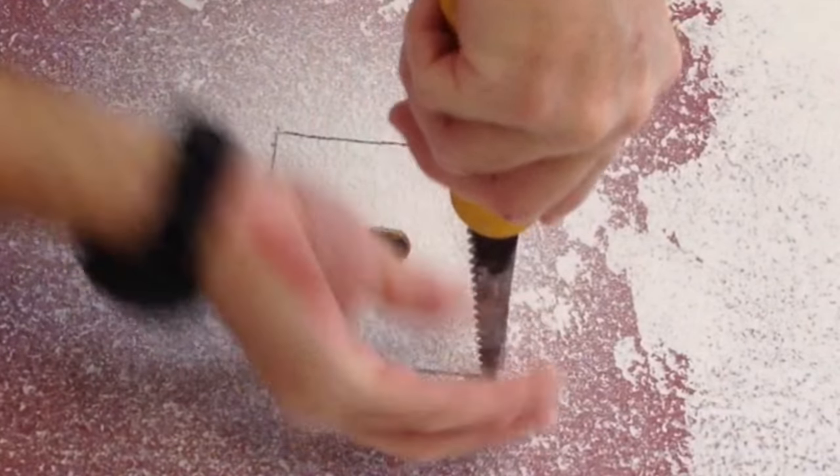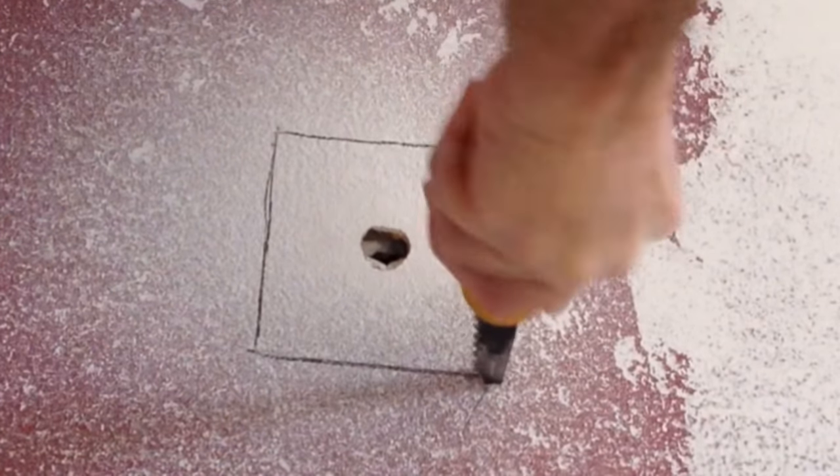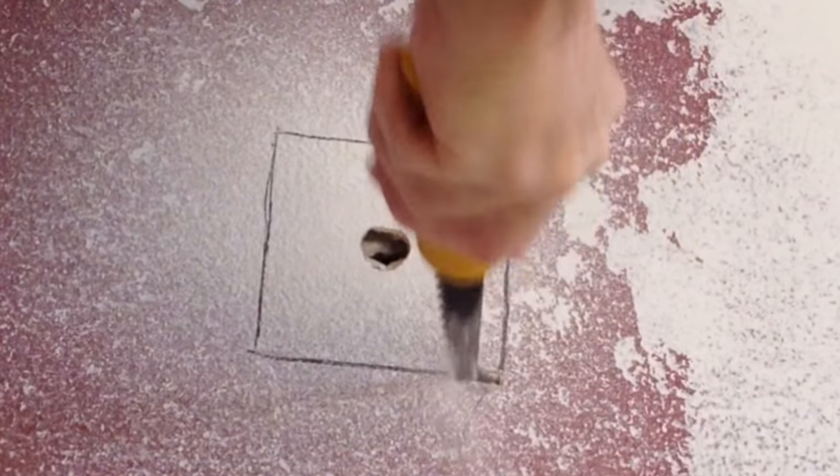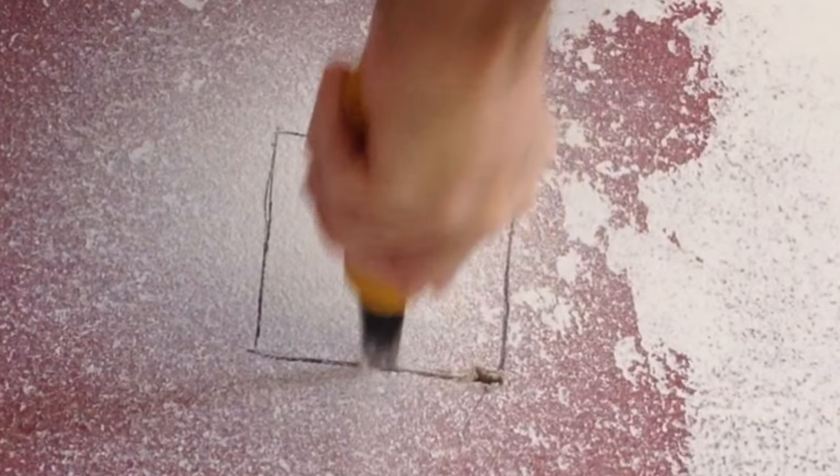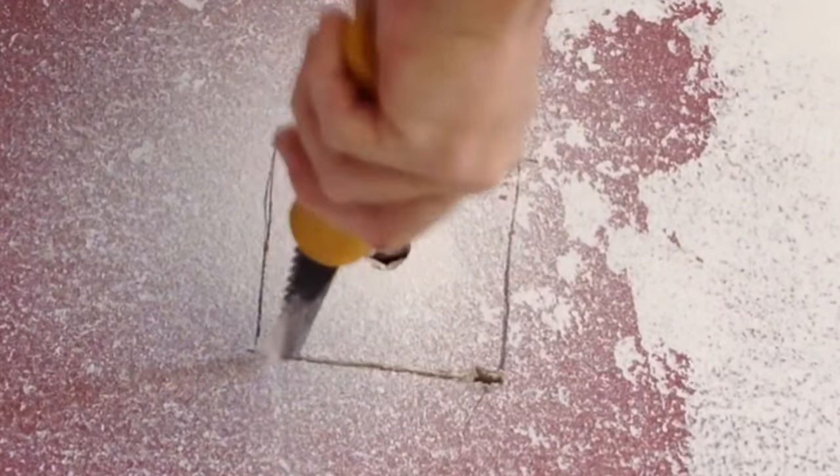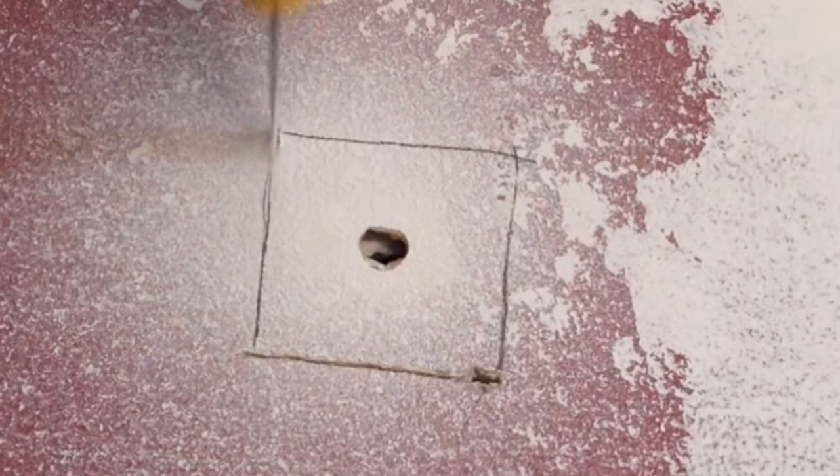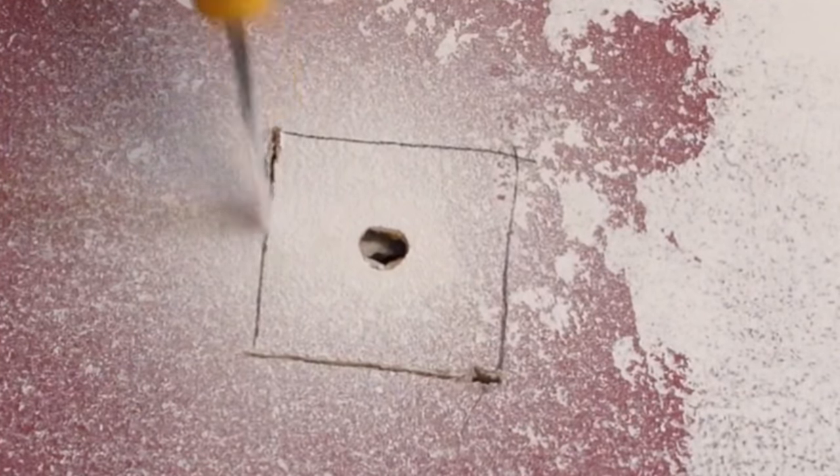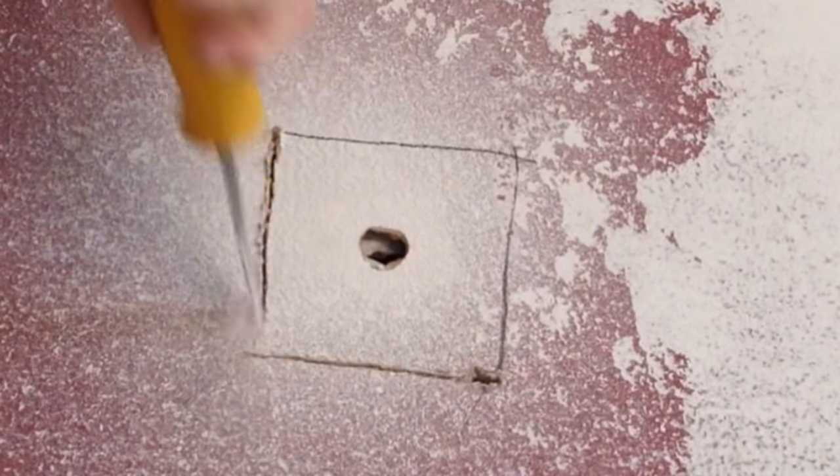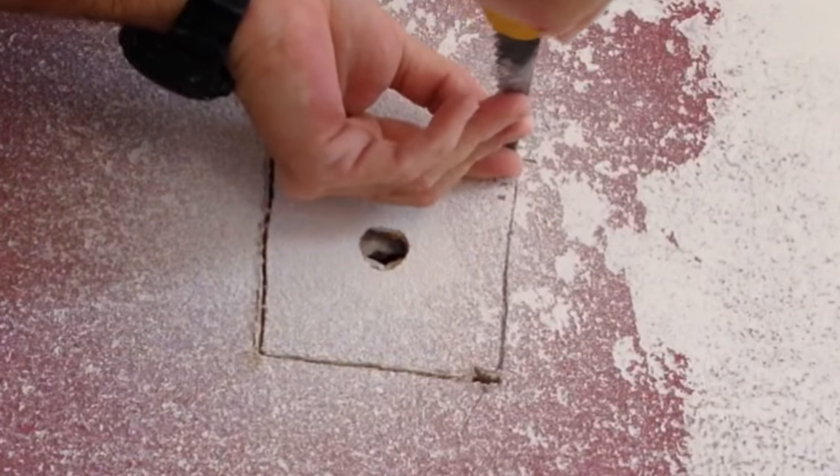So once you get it marked out, take your drywall keyhole saw and cut around the pencil mark. Try and keep it close but it doesn't have to be perfect. Poke the end through first and start cutting. It's easier to cut down than to cut up.